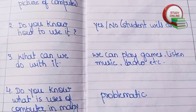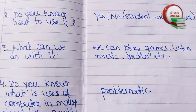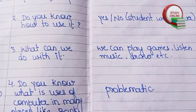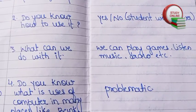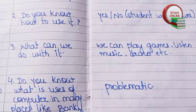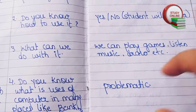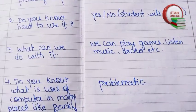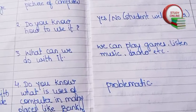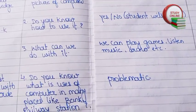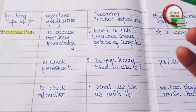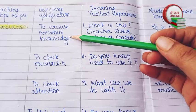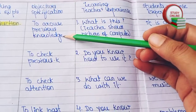The third question would be 'What can we do with it?' and students will answer in their own words — for example, we can draw diagrams or listen to music. The last question is 'Do you know what are the uses of computer in many places?' which is the problematic question to check previous knowledge.